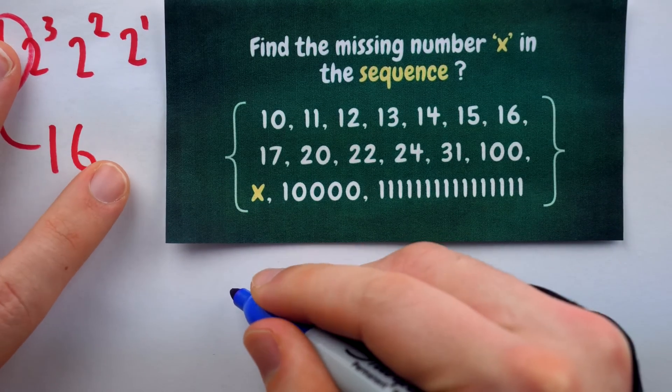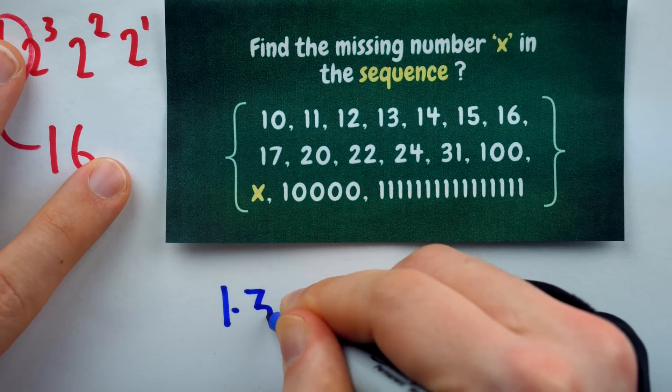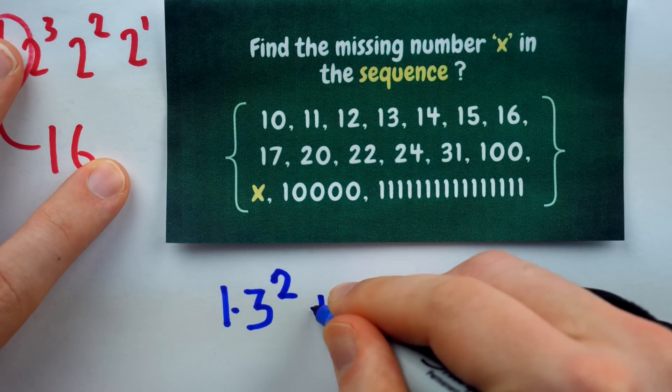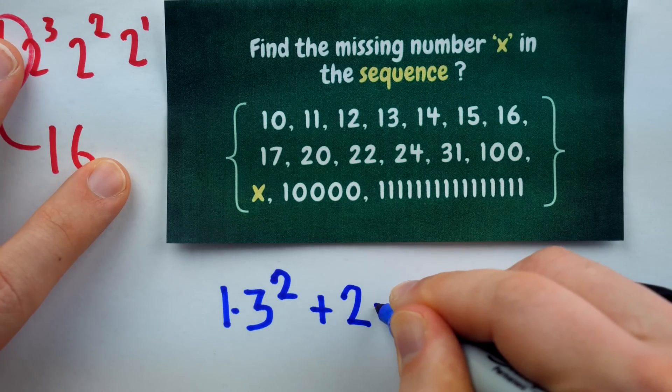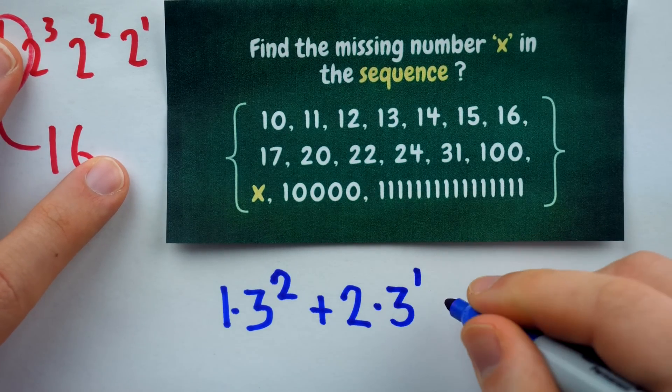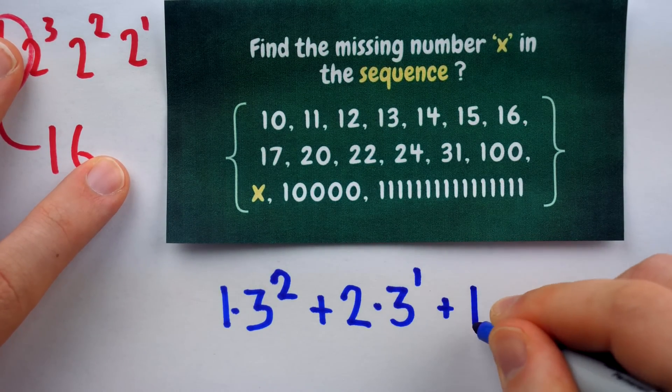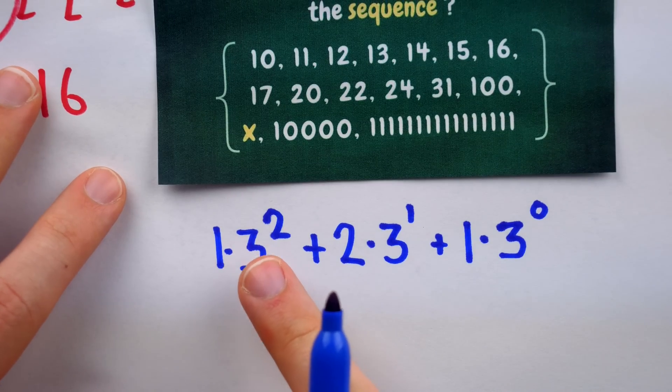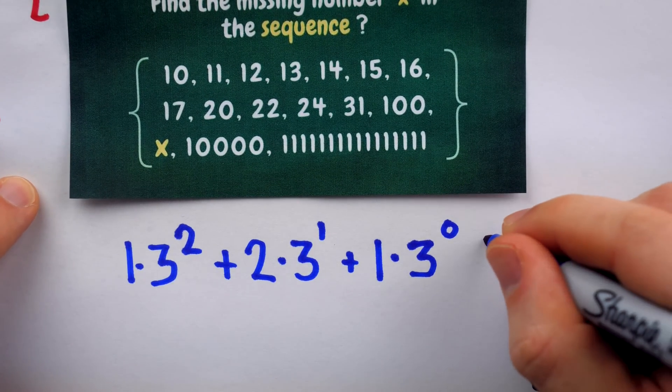To express 16 in base 3, we need 1 copy of 9, that's 3 squared. We need 2 copies of 3, that's 3 to the power of 1, and we need 1 copy of 1. That's 9 plus 6 plus 1, which is 16.